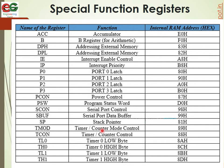Looking at the SFR table: ACC has internal address E0H. B register is used for multiplication and division at address F0H. We also have DPH and DPL, Interrupt Enable, and Interrupt Priority. Port registers P0, P1, P2 are mapped in the table. For example, data sent to P0 is loaded to the outside world.